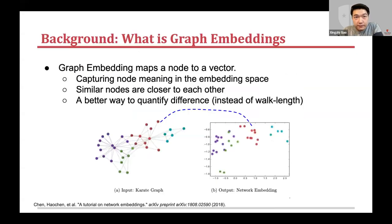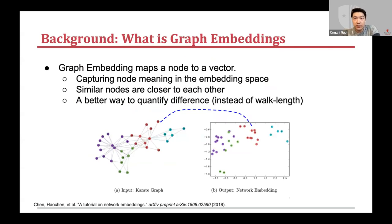First, what is graph embedding? Others may call it network embedding or node embeddings. Basically, it's a function that maps a node in the graph to a numerical vector, which we call an embedding vector. As the following example shows, we could map every node in this graph to a 2D space. The embedding captures the meaning of the node in the original graph, where closer nodes in the graph may have similar vectors in the embedding space.